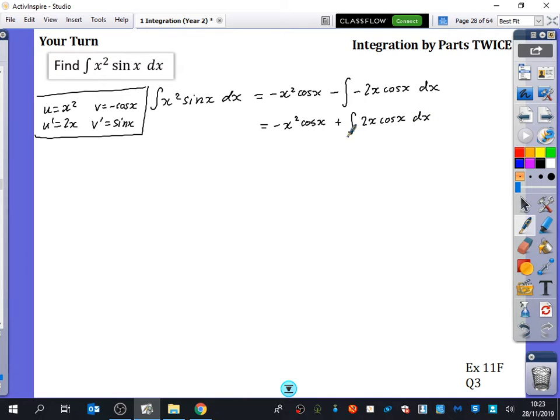This is the thing I'm going to do separately. So I'm now going to do 2x cos x dx. This time u is 2x, u dash is 2, v dash is cos x, so v is sin x.